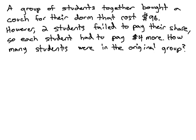In this video, we consider a purchase made by several students, where some students fail to pay their share. A group of students together buy a couch for their dorm that cost $96. Two students fail to pay their share, so the remaining students have to pay $4 more each. We want to know how many students were in the original group.